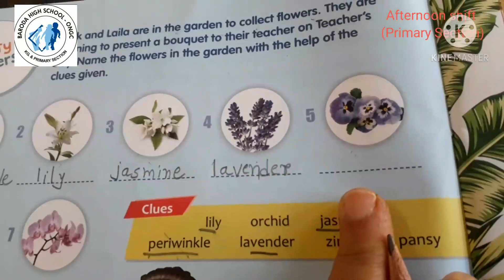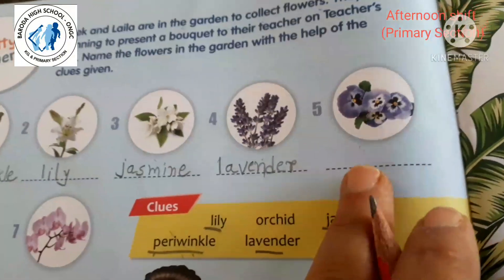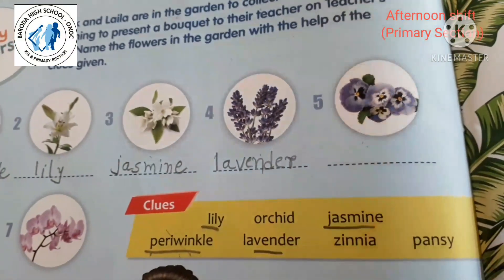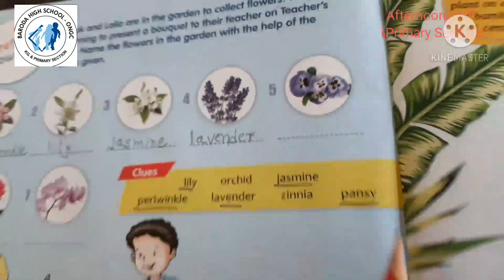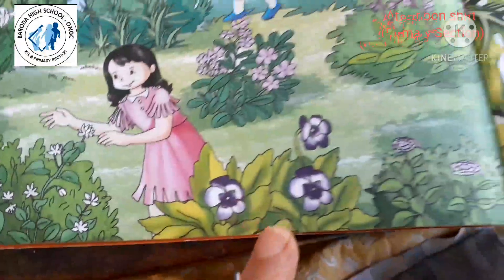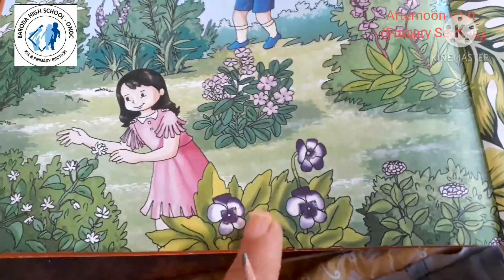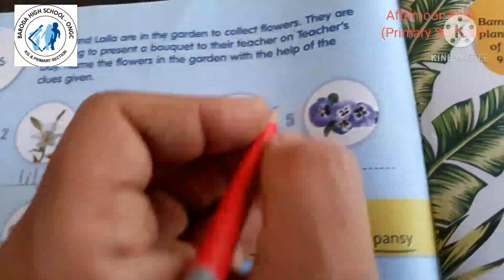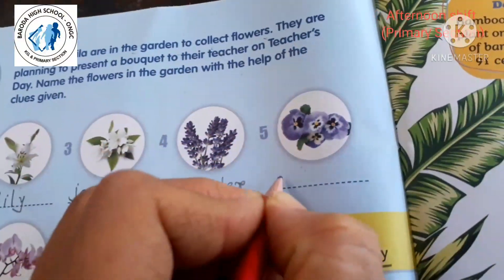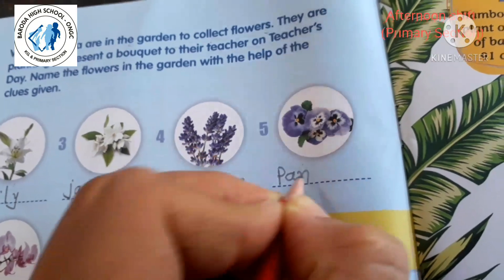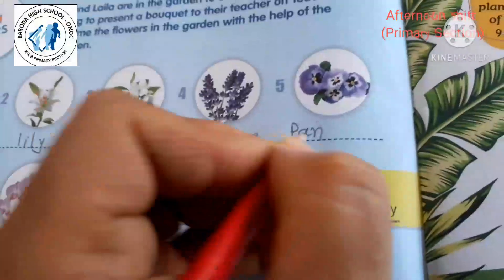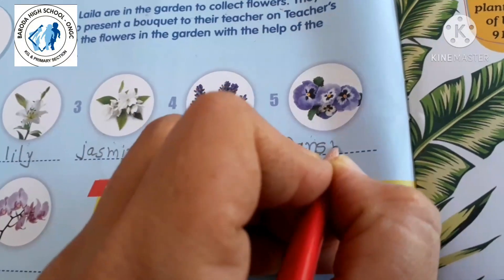Fifth — which are these flowers? Pansy. We call it pansy. See here — you can see this flower. So this is pansy: P-A-N-S-Y — Pansy.